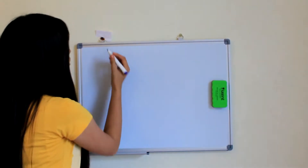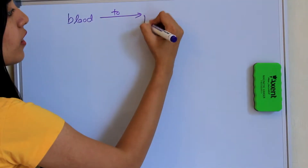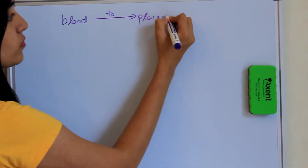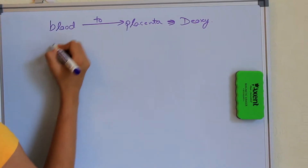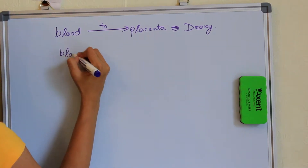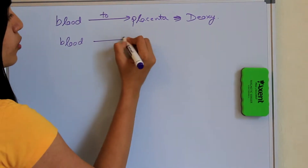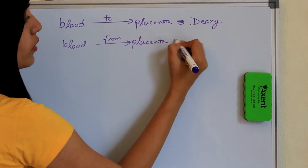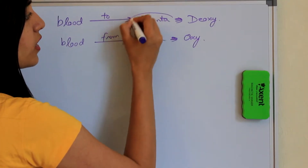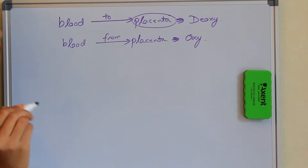First of all, we need to understand that the source of oxygen in fetal blood is the placenta and not the lungs. So based on this, we have two main observations: the blood in the fetus when it goes to the placenta will always be deoxygenated, and the blood when it comes from the placenta will always be oxygenated, because the placenta is the source of oxygen in the fetal blood.